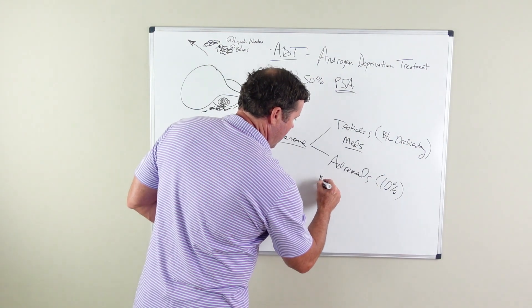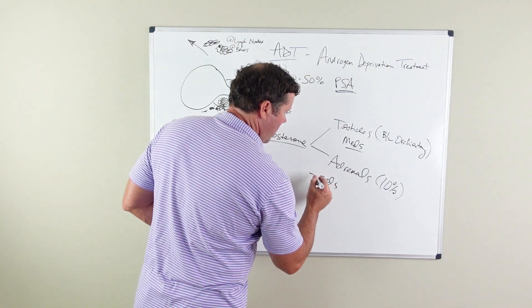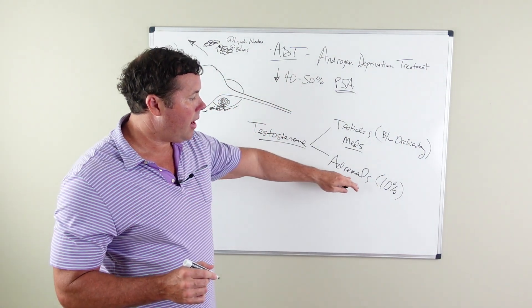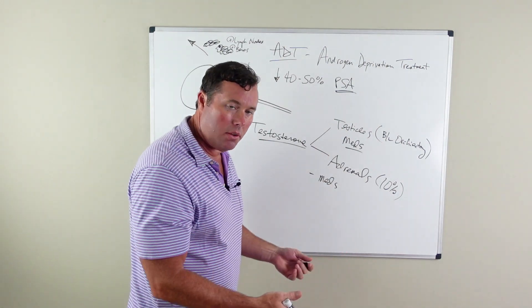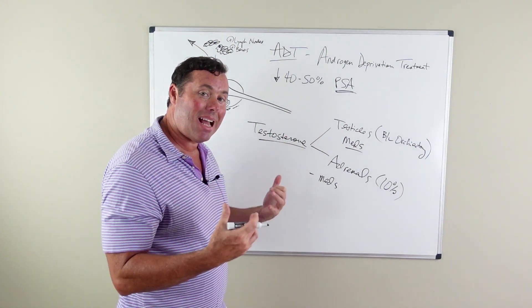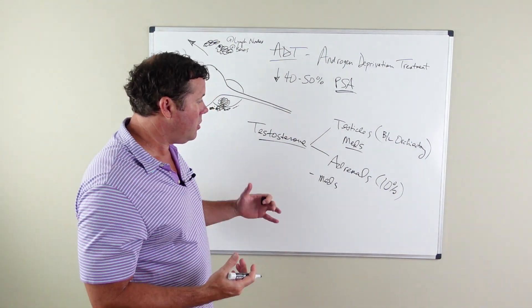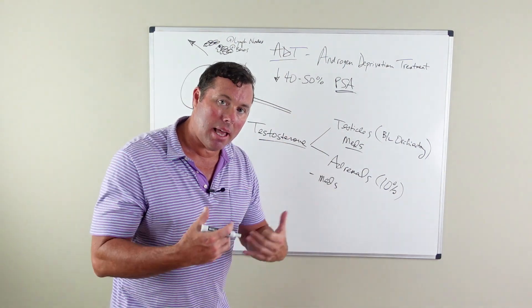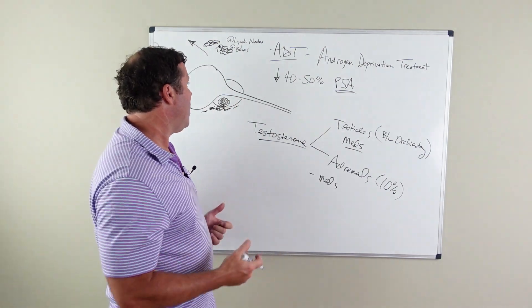There are also medications that are directed towards the adrenal production of testosterone, called antiandrogens, and they're used to block this remaining 10% of testosterone production.